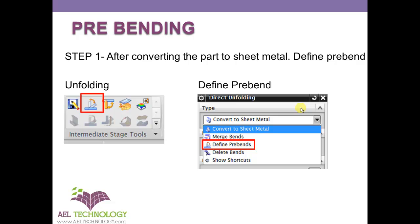Open UG NX, get into Progressive Die Wizard. Once you convert the part into a sheet metal, go to unfolding and then in the unfolding window, in the drop-down menu, select the defined prebends.